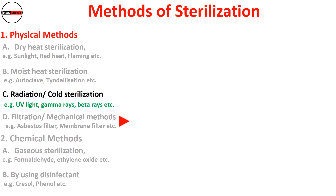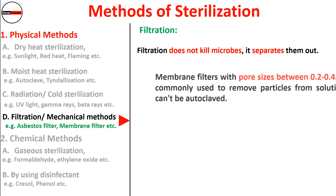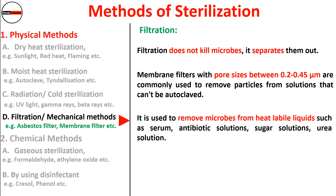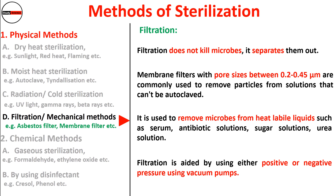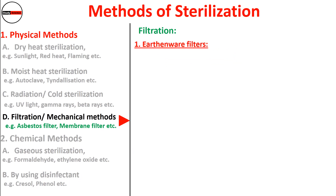The next method is filtration, also called the mechanical method. Filtration does not kill microbes — it only separates them out. Membrane filters with pore size between 0.2 to 0.45 micrometers are commonly used to remove particles from solutions that cannot be autoclaved. It is used to remove microbes from heat-labile liquids such as serum, antibiotic solutions, sugar solutions, and urea solution. Filtration is aided by either positive or negative pressure using vacuum pumps. The first type of filter is earthenware filters, made from diatomaceous earth or porcelain, usually baked into the shape of a candle.